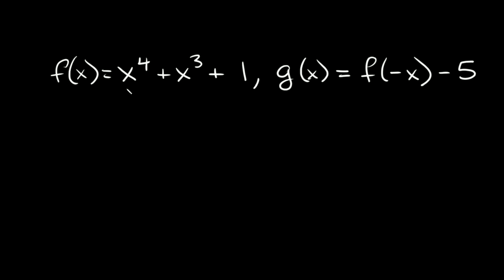Last one here. So this is f of x is equal to x to the fourth plus x cubed plus one, and g of x is equal to f of negative x minus five. So for g of x, we want to replace f of x with f of negative x. So instead of just f of x, we're going to have f of negative x, and we also have this minus five.